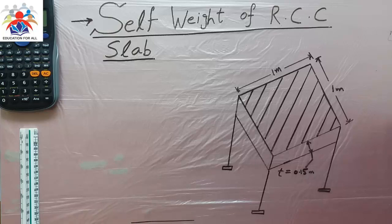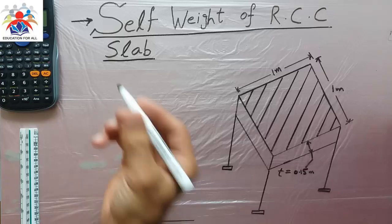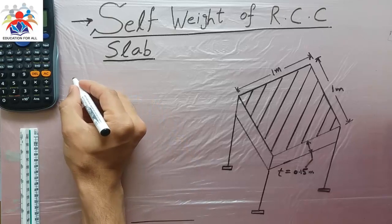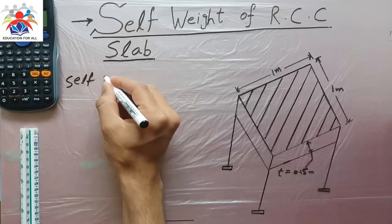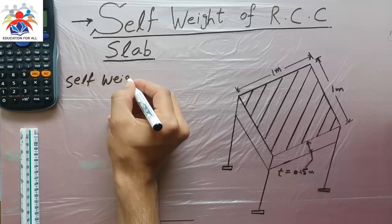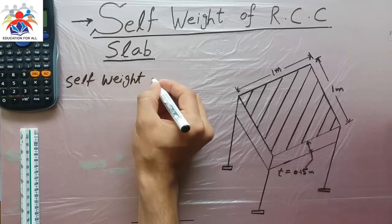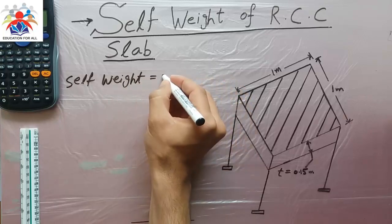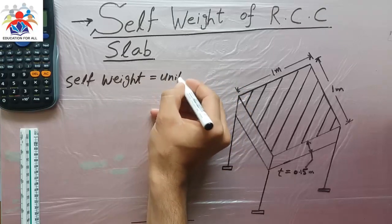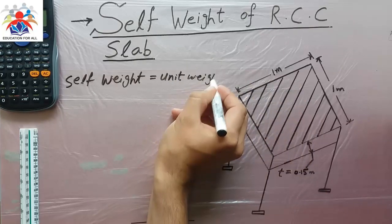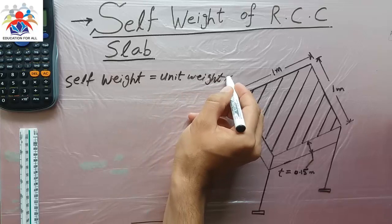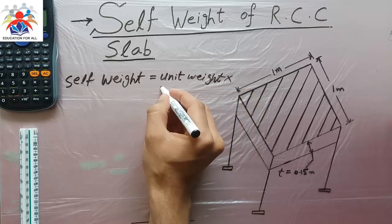The formula for the self-weight of a slab is very simple. Self-weight equals unit weight multiplied by thickness of slab.